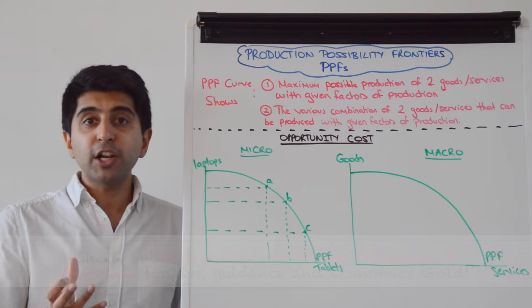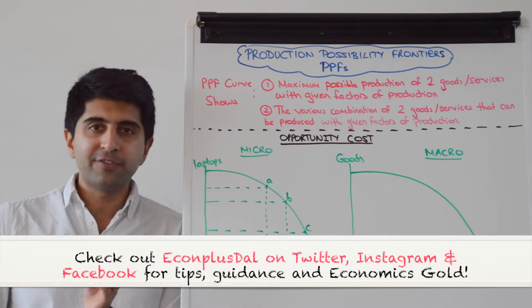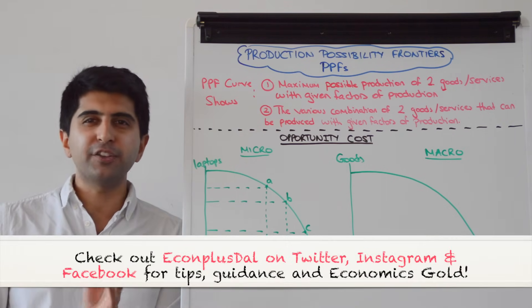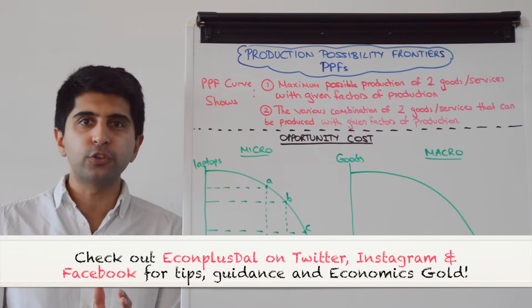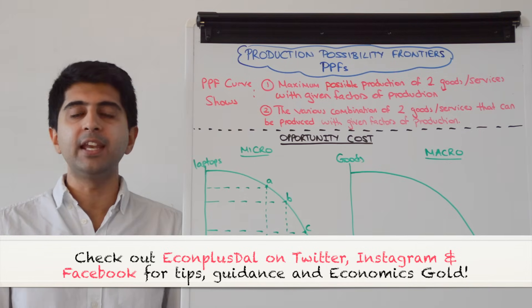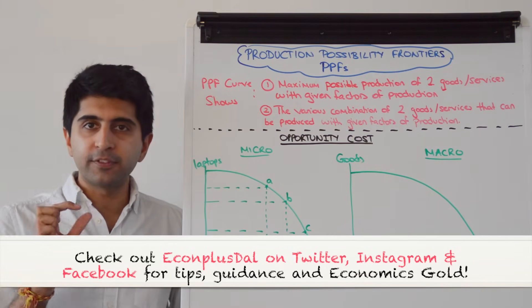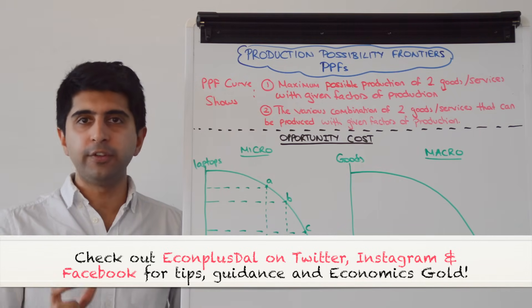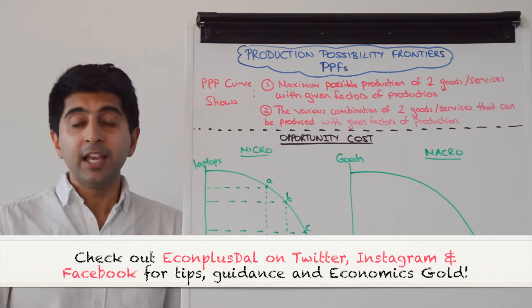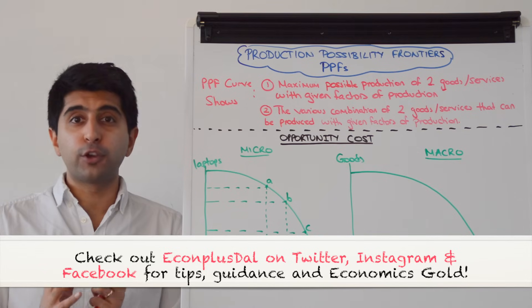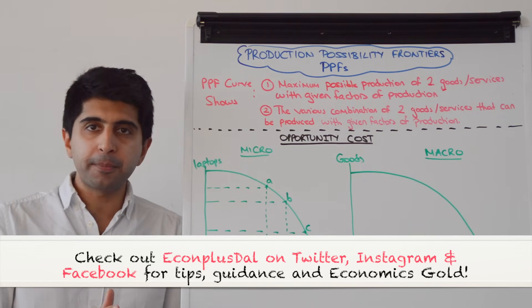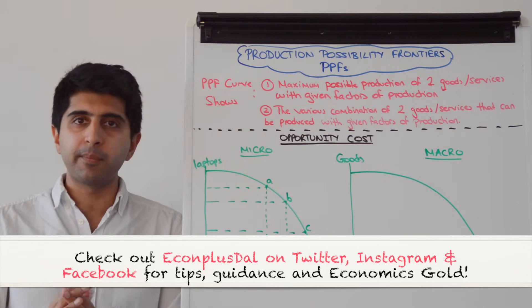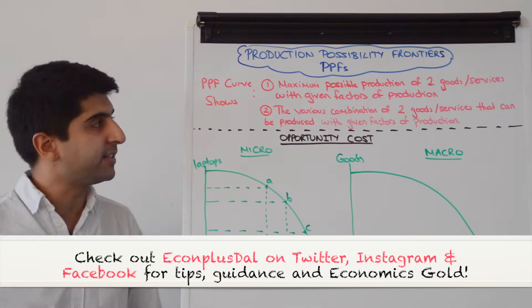Hi everybody. Production possibility frontiers or production possibility curves are very useful tools to illustrate the ideas of scarcity and choice in economics. These curves are great because we can look at them from a micro perspective and from a macro perspective.